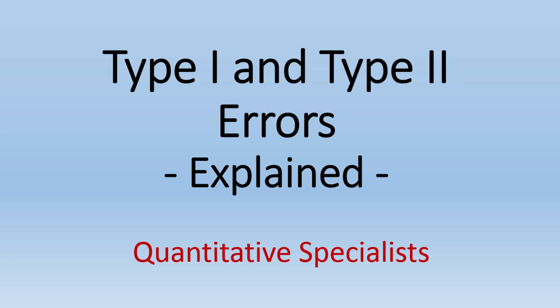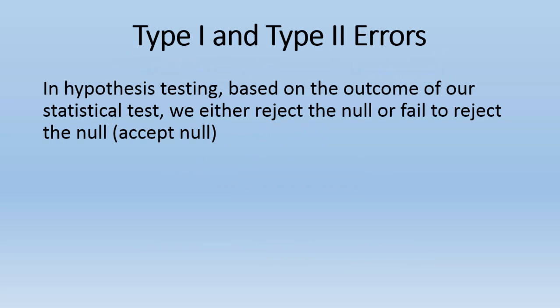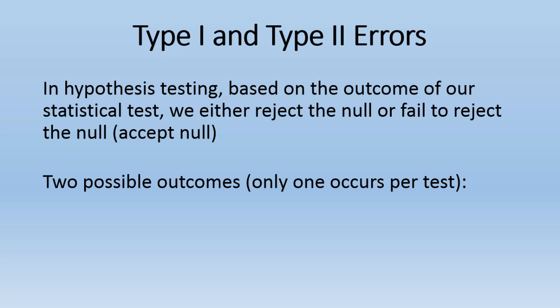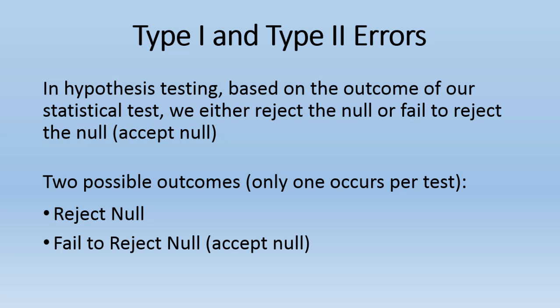In this video we'll take a look at type 1 and type 2 errors in hypothesis testing. In hypothesis testing, based on the outcome of our statistical test, we either reject the null or we fail to reject the null, which is also referred to sometimes as accepting the null. So there are two possible outcomes: either reject the null or fail to reject the null.